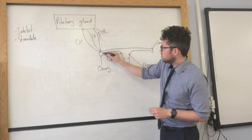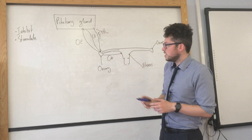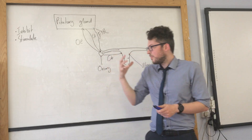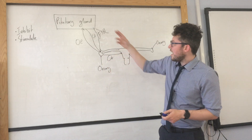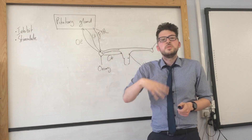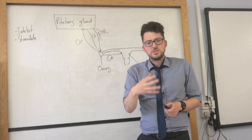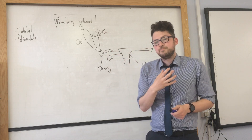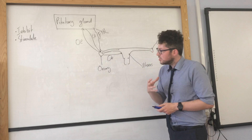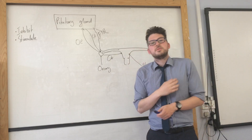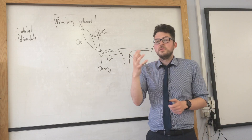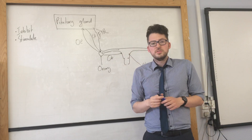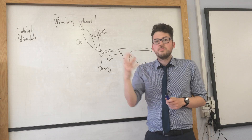The egg will travel along towards the uterus. To clarify, FSH's role is to mature the egg to make sure that they're ready. That is a simple explanation of the hormones of the menstrual cycle and hormones and their general effect.